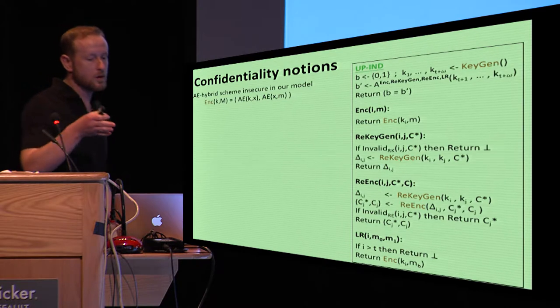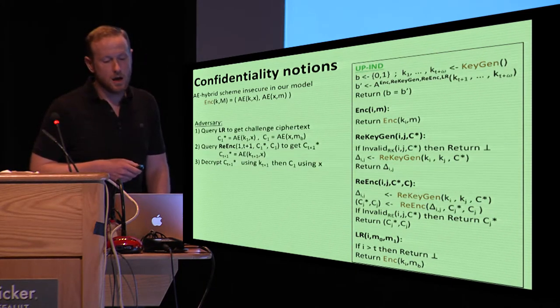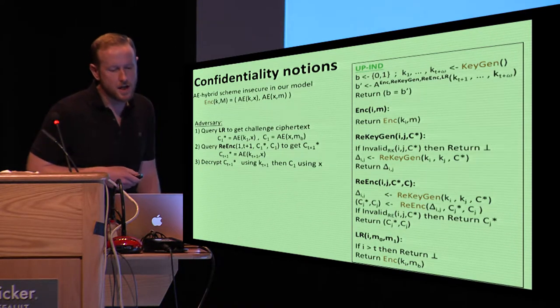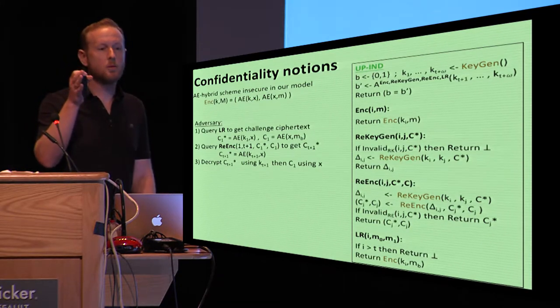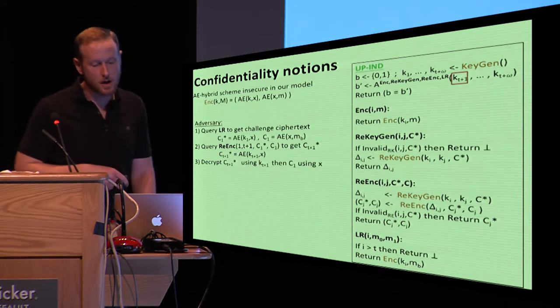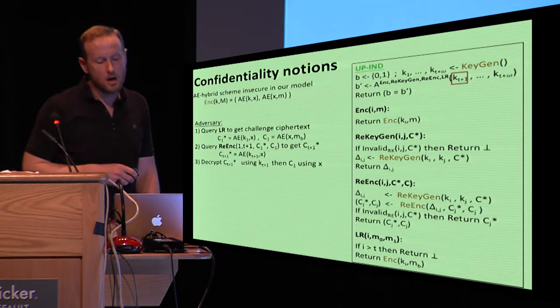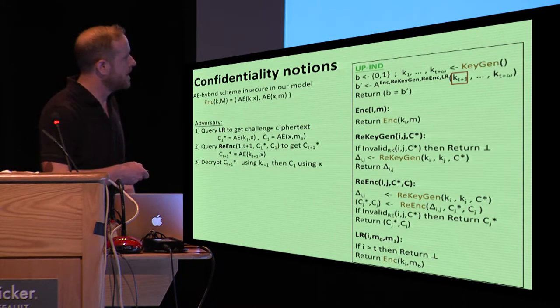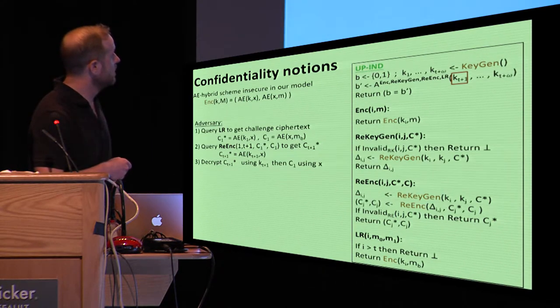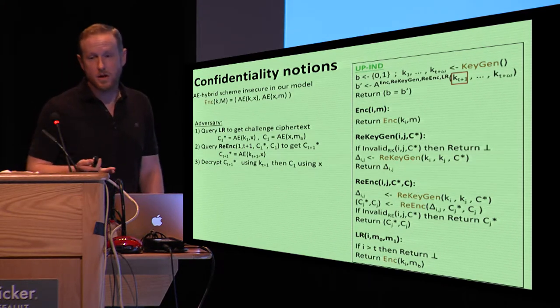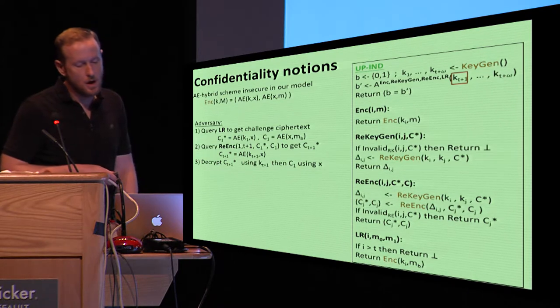This last thing turns out to be something that was kind of interesting to us because it surfaced a compromise scenario that we hadn't thought of before. In fact, it allows showing that in our model, at least, things like AE hybrid don't even meet this up IND security notion. So let me just go over that very briefly. Remember, AE hybrid is just this KEM-DEM thing where we encrypted a data encapsulation key X under our key K and then the message under X. In this context, our adversary can do the following. Query the left-right oracle to get a challenge ciphertext. Query re-encryption now to re-encrypt this ciphertext to a compromised key, T plus one. So this is one of the ones that's given to the attacker. At this point, the invalidity procedure will say, oh, this is kind of an invalid query because you're rotating a challenge ciphertext to a compromised key. But because we're being very permissive, we're going to give back the header C, in this case, C T plus one star.